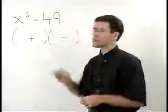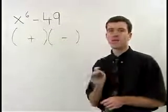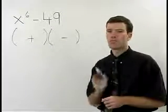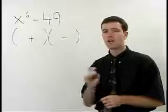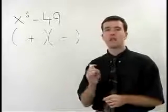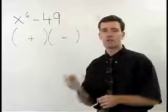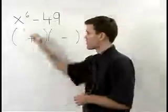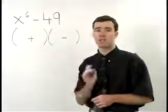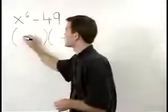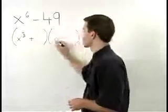What are the factors of x to the 6th that are the same? Remember the rule is that those factors will use one half of the exponent on the original. So the factors of x to the 6th that are the same are x to the 3rd and x to the 3rd.